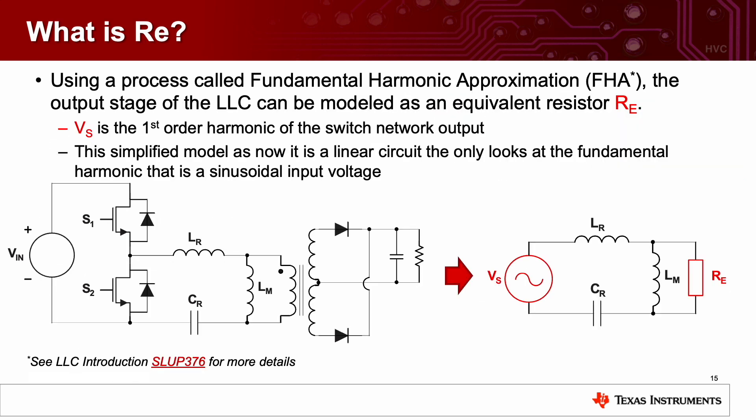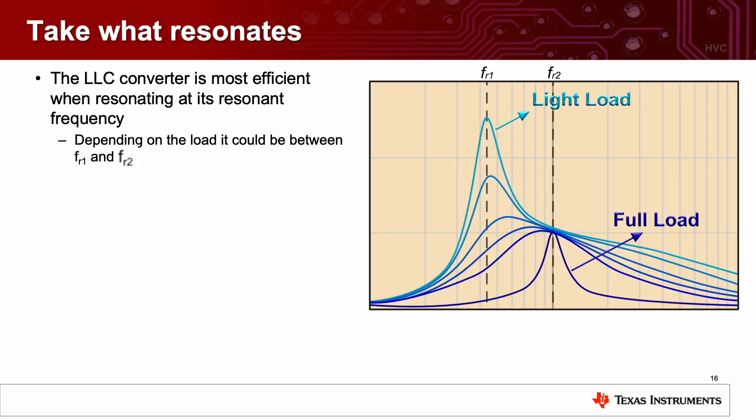In the resonant charts, you've been seeing this RE. So what is that actually? This is derived using a process called Fundamental Harmonic Approximation, or FHA. The output stage of the LLC is modeled as an equivalent resistor, which is called RE. If you look in the schematic here, VS is the first-order harmonic of the switch network output. This is a simplified model, as it is now a linear circuit that only looks at the fundamental harmonic that has a sinusoidal input voltage. This makes it easier to model the LLC circuit. An LLC converter is most efficient when it is resonating at the resonant frequency. Depending on the load, it can be between FR1 and FR2, as shown here.